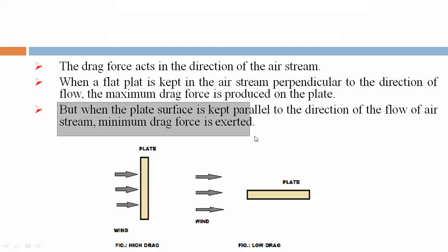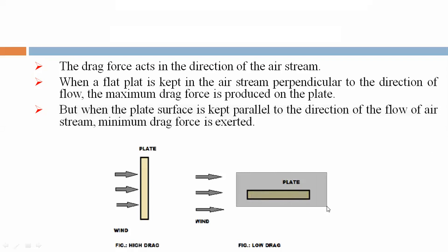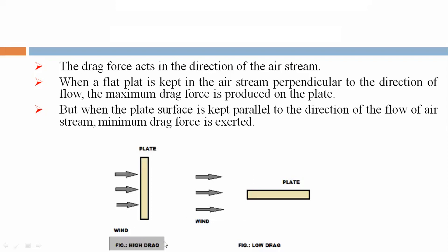When the plate surface is kept parallel to the direction of flow of the air stream, minimum drag force is exerted. A flat plate parallel to the wind or air stream produces low drag. If the plate is in perpendicular form, high drag force is obtained. This is the difference between horizontal and vertical plate arrangements.